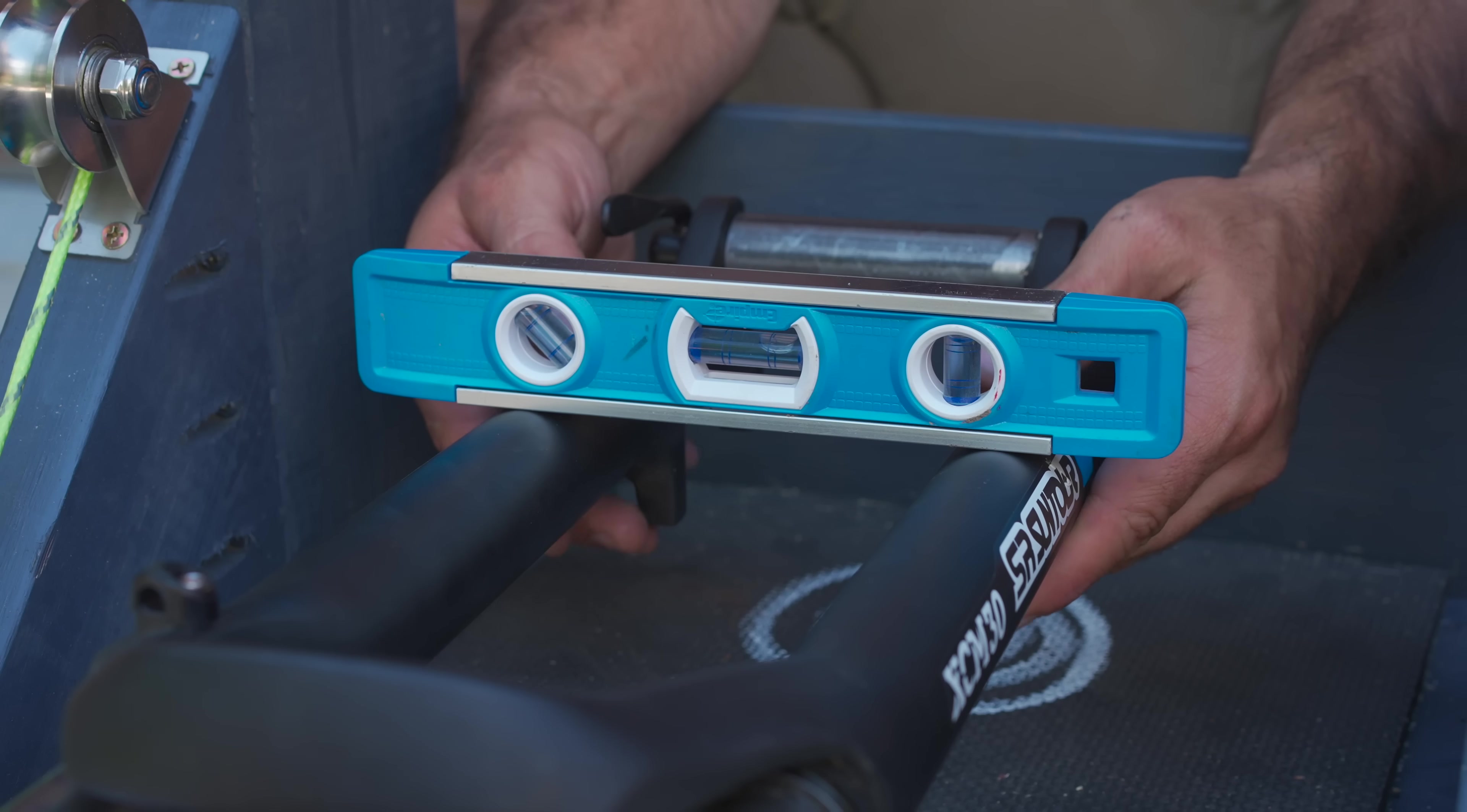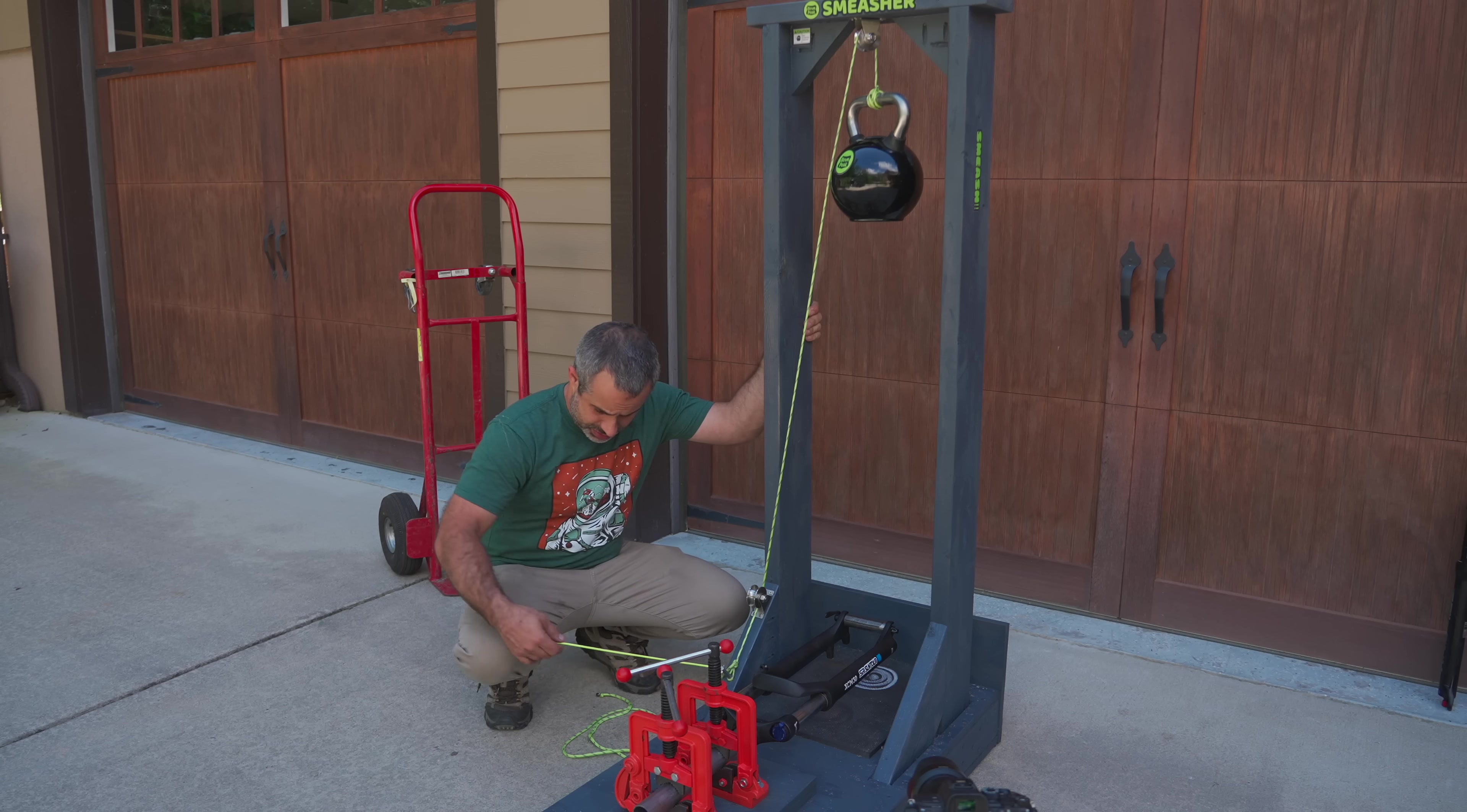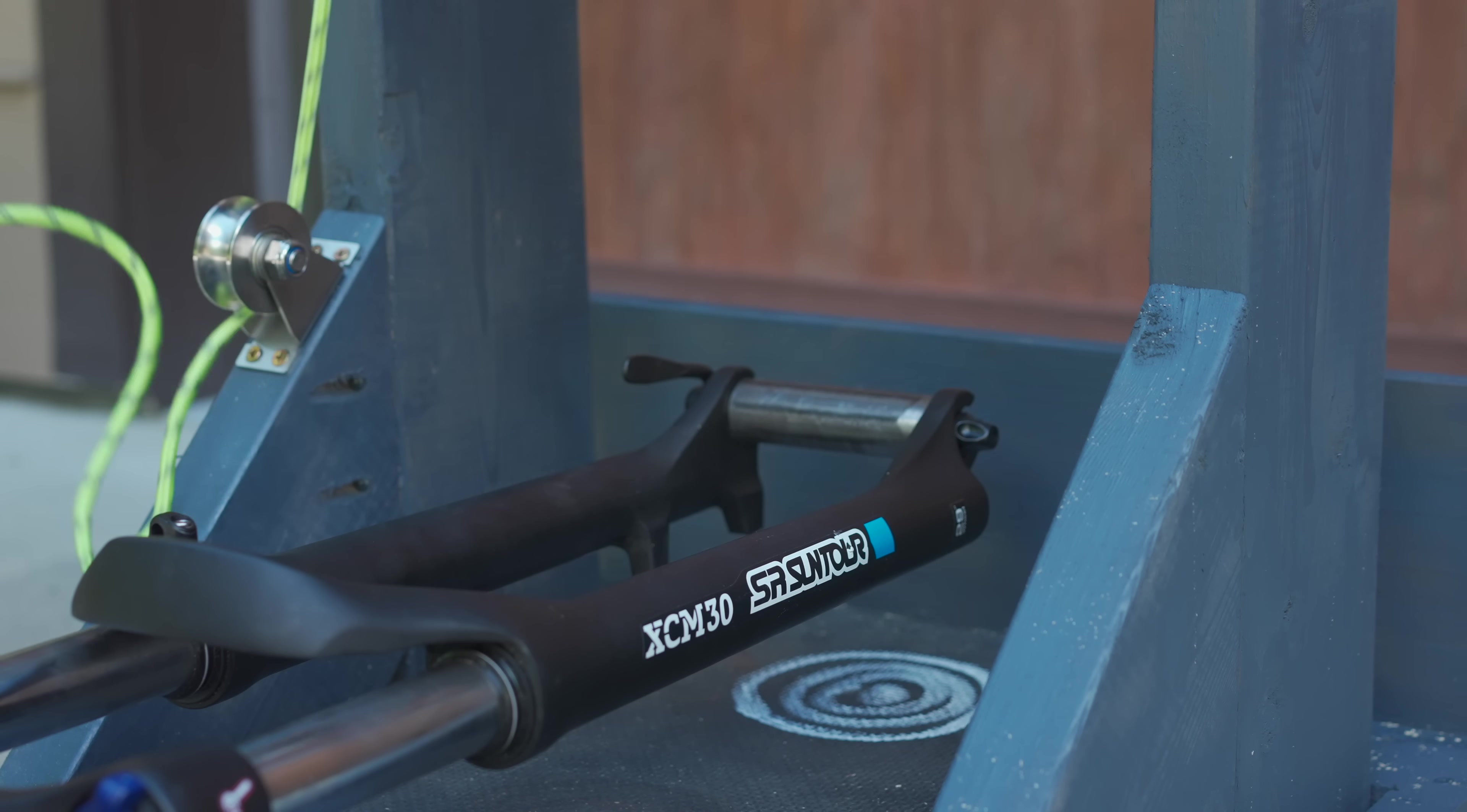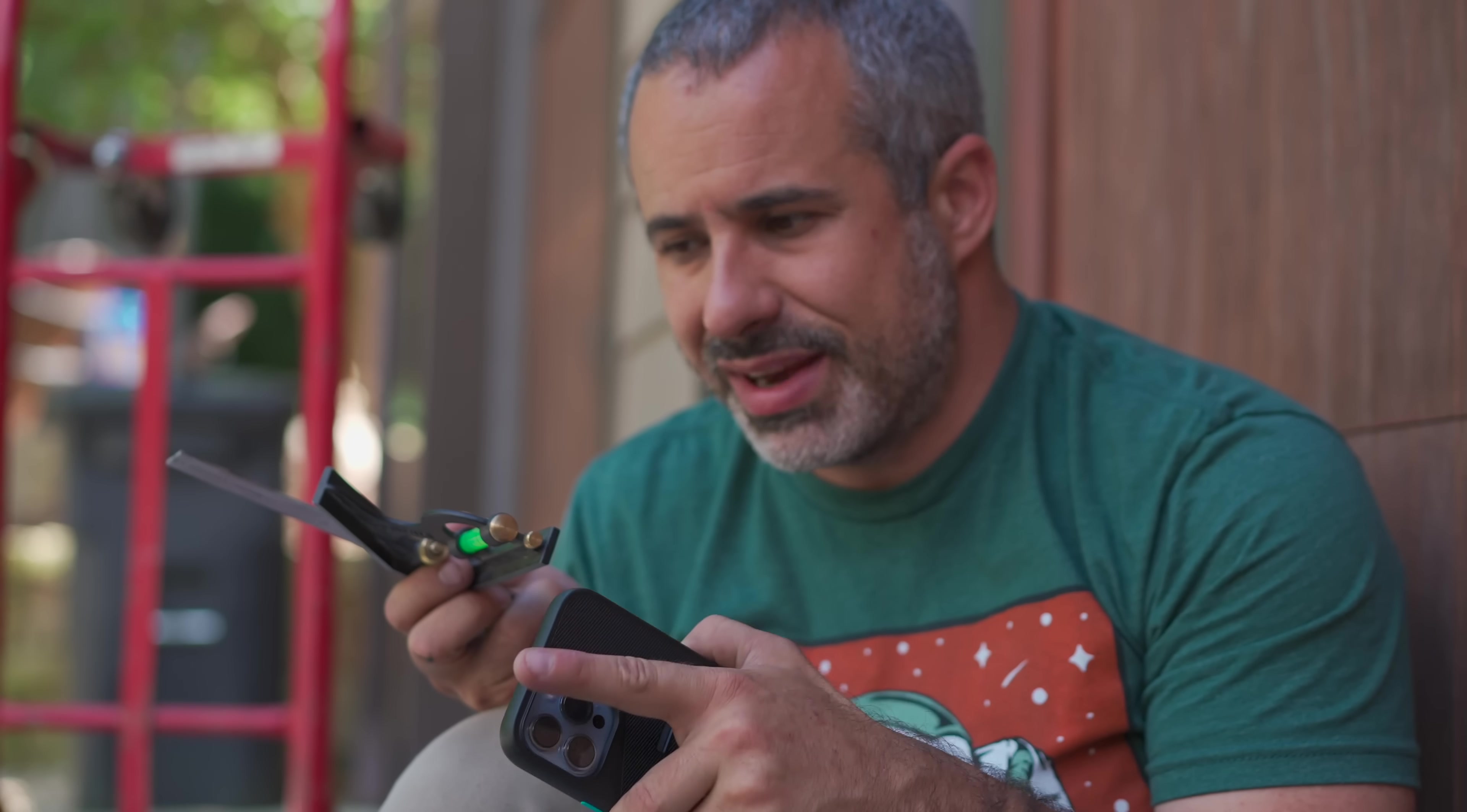First, we're going to get the fork completely level. Then we're going to measure how high the fork is sitting off of the mat so that we can take another measurement after the smash and see what the permanent deformity is. And now we smash it. Suntour test number one, permanent deformity of six millimeters. Let's run it again.